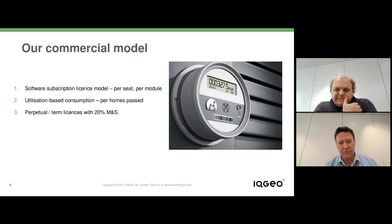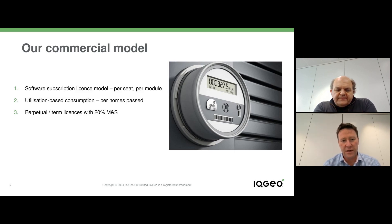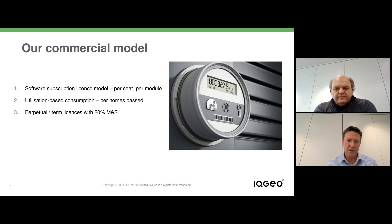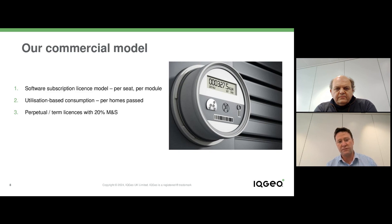For the Comsoft product — the automated fiber planning engine — we sell it on a consumption-based model called a demand point. A demand point is a home or premise that the software is used to plan for. So if a customer is rolling out fiber to 1,000 homes, they would buy 1,000 demand points, and we charge on that demand point basis.